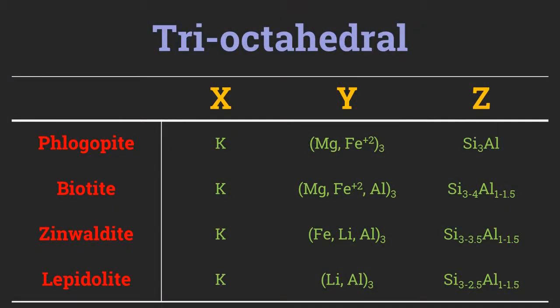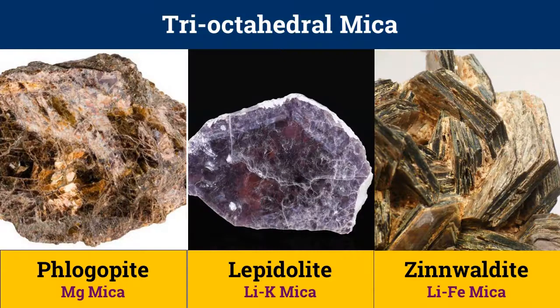Trioctahedral mica minerals have three Y ions in their composition. Phlogopite, biotite, zinnwaldite, and lepidolite are trioctahedral mica minerals. Phlogopite is a magnesium-rich mica, zinnwaldite is lithium and iron rich, and lepidolite contains both lithium and potassium.